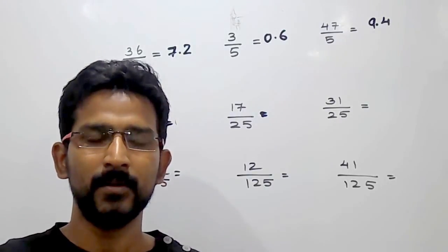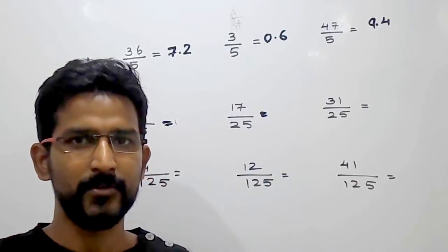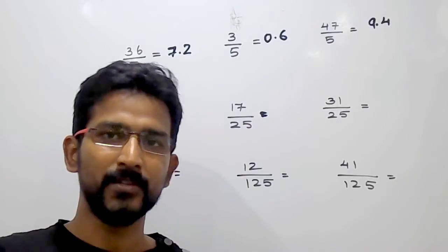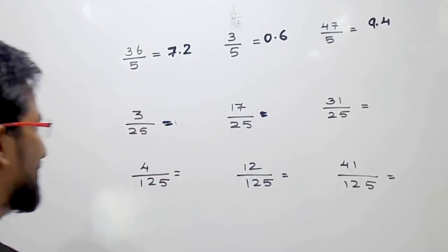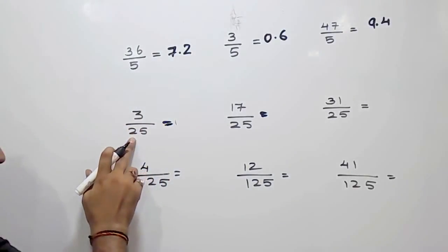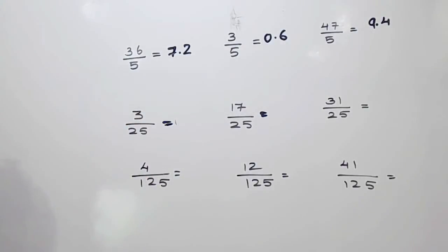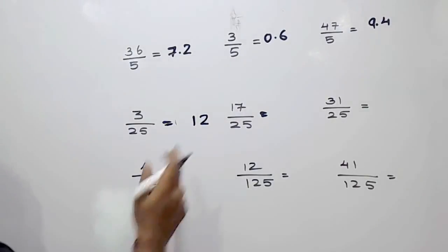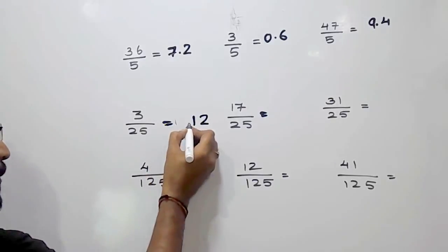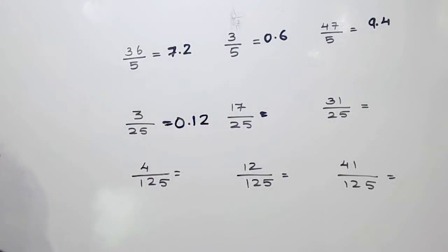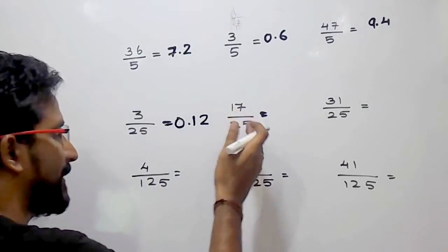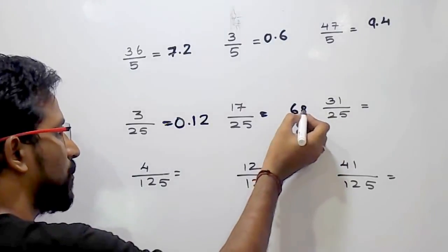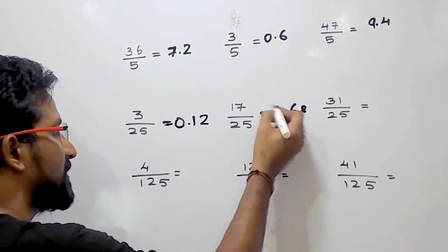Now if you want to divide any number by 25, what you have to do is multiply that number by 4 and put the decimal after two numbers from the right. For example, 3 divided by 25: multiply 3 by 4, which gives 12. Put the decimal after two numbers from the right — 0.12. Now 17 divided by 25: 17 times 4 is 68, so after two numbers the point goes here — 0.68.